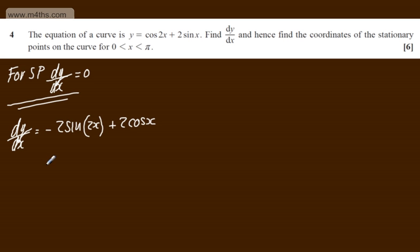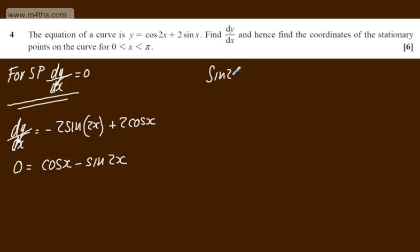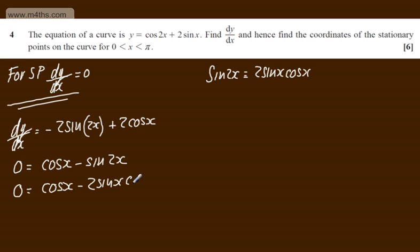Setting this equal to 0 and rearranging slightly: dividing both sides by 2 gives cosx - sin2x = 0. At this stage I'm going to use the identity sin2x = 2sinxcosx, so I can rewrite this as cosx - 2sinxcosx = 0. Factoring out the common factor of cosx gives cosx(1 - 2sinx) = 0.